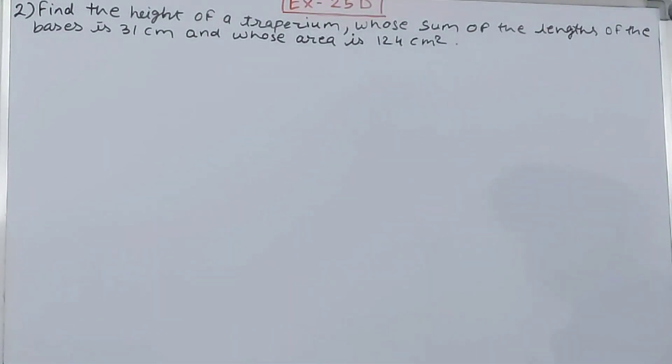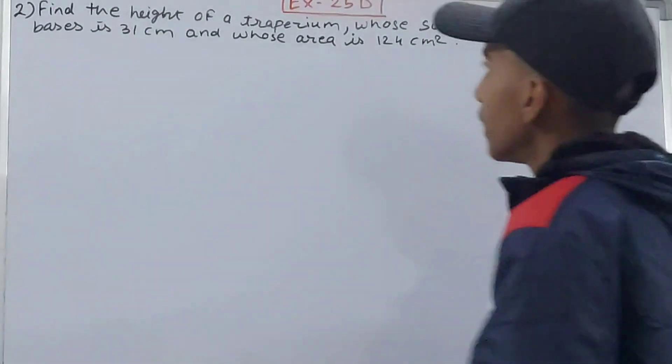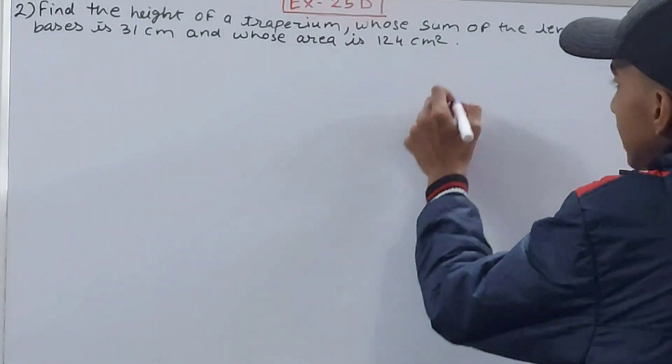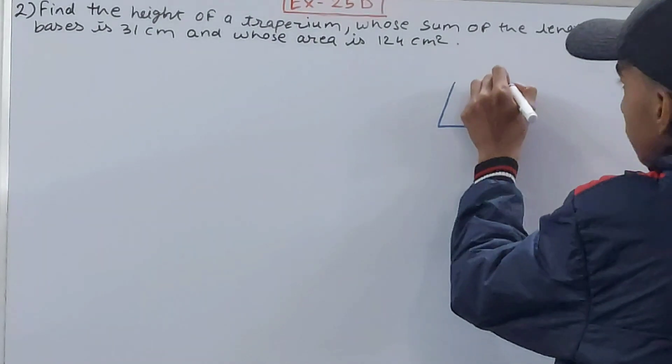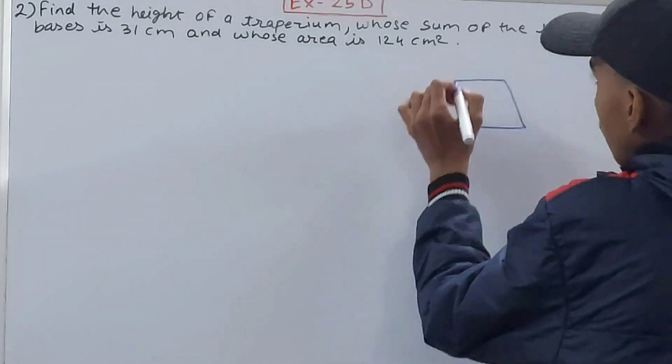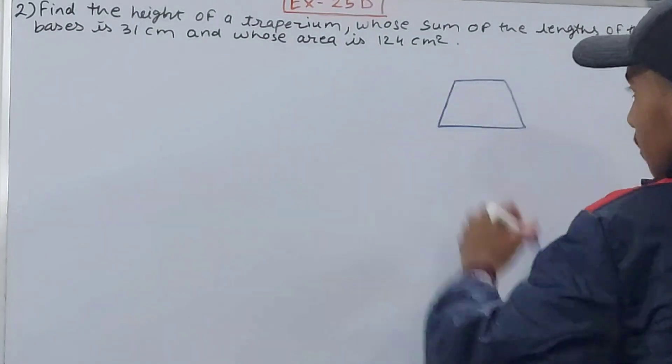of a trapezium whose sum of the lengths of the bases is 31 centimeters and whose area is 124 square centimeters. So over here we have a trapezium. In this trapezium, we have the bases, right? The sum of